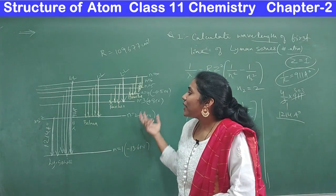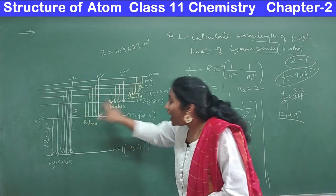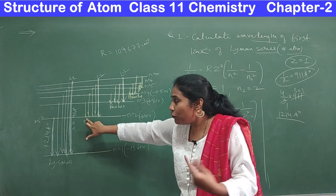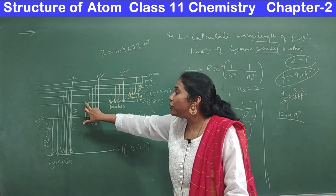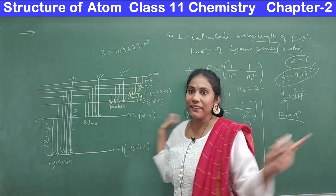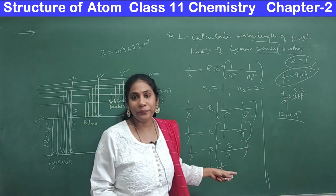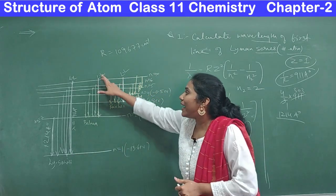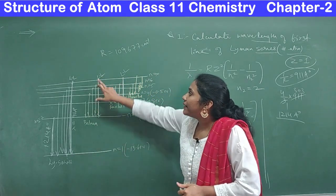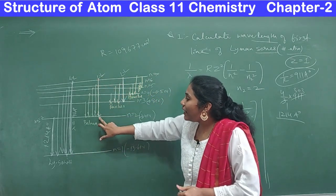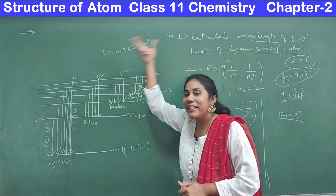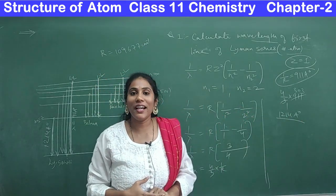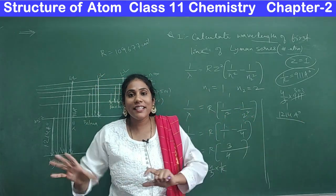Similarly, for the first line of the Balmer series: n₁ = 2, n₂ = 3. For the limiting line of the Balmer series: n₁ = 2, n₂ = infinity. Substitute and calculate the same way.